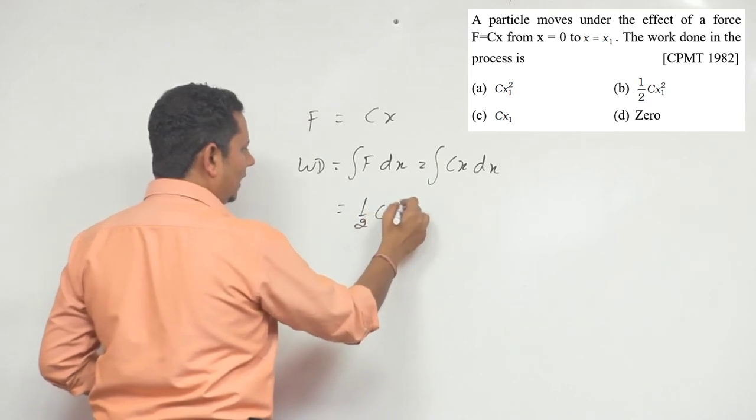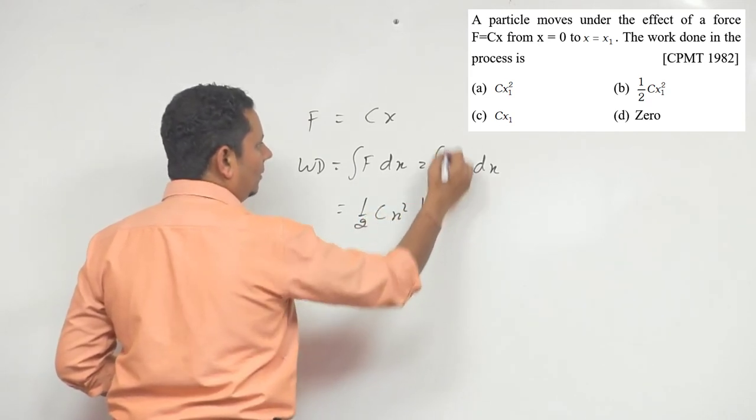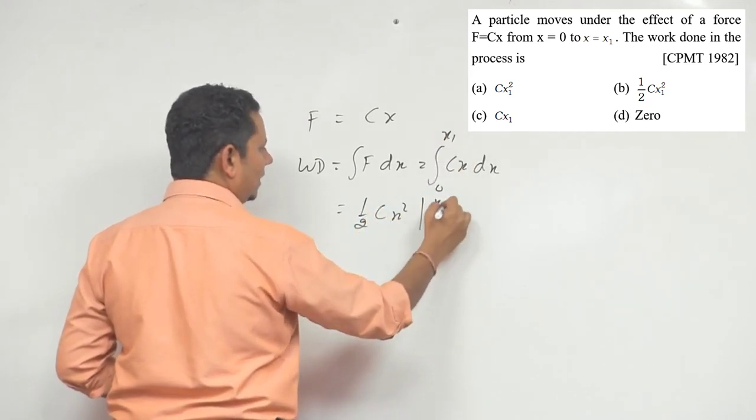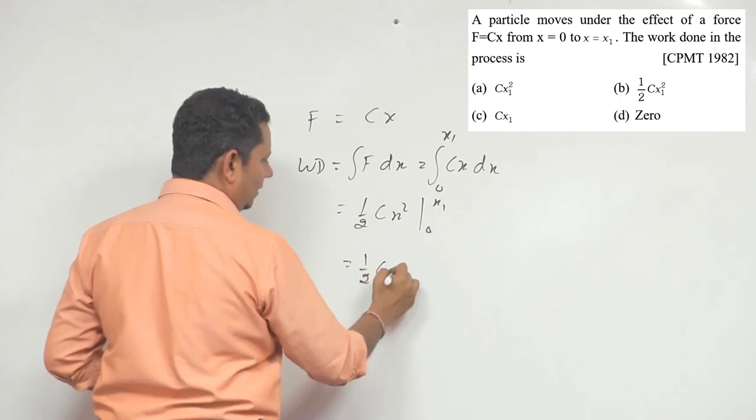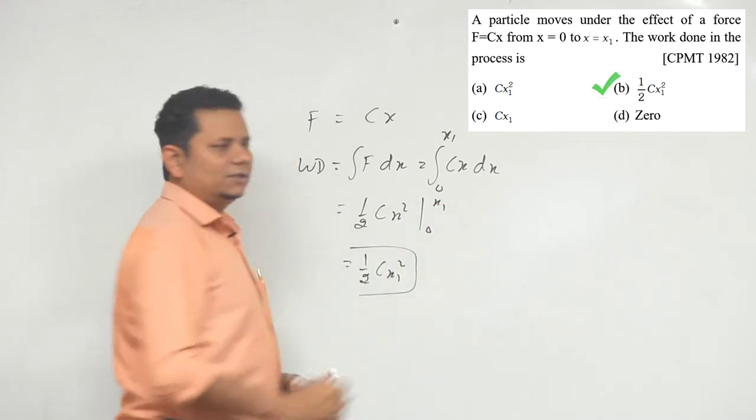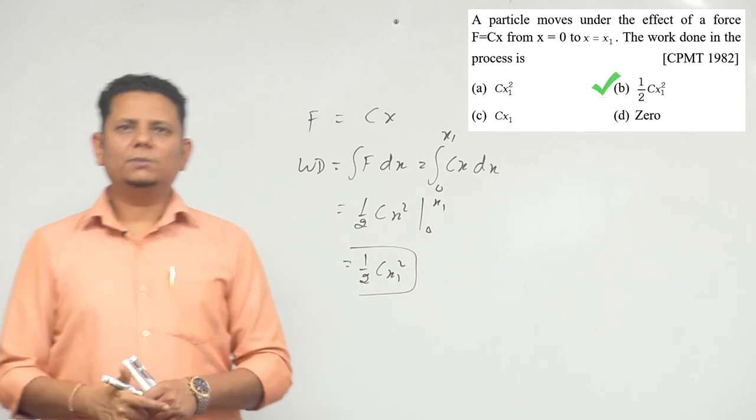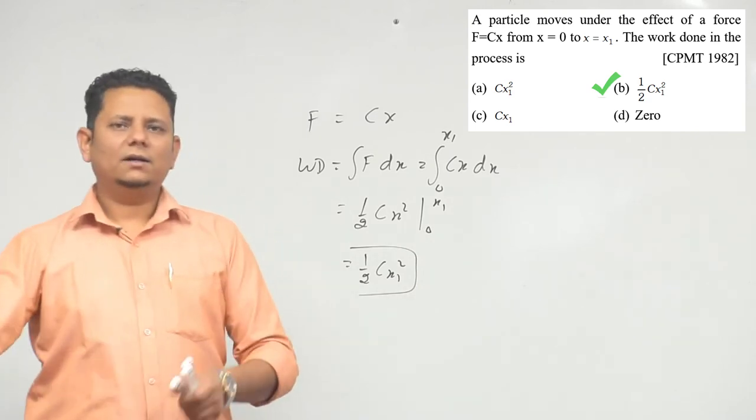When we integrate this, half cx square with limits 0 to x1, 0 to x1, so that is half cx1 square. So based on this we can say half cx1 square would be the right answer.